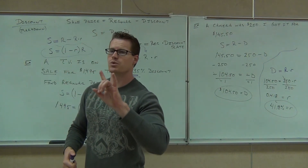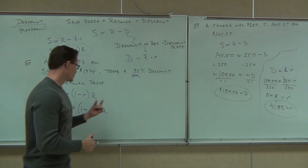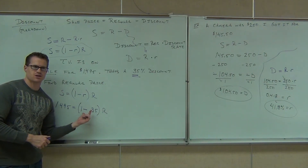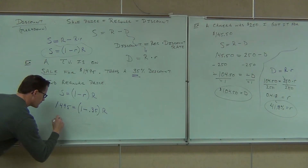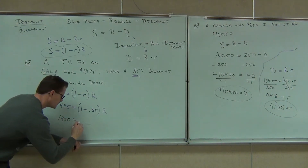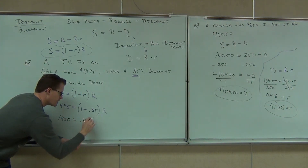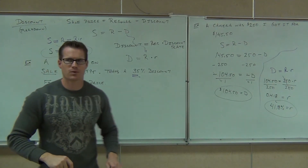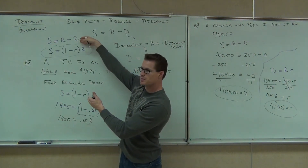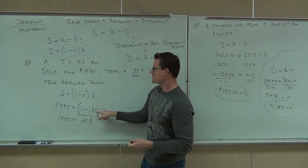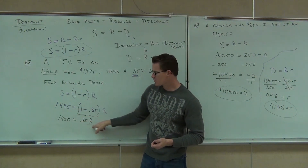We've got two steps left. The first step is to do operations like you normally would — subtract 1 minus 0.35, and you're going to get 0.65. See where the 0.65 is coming from? One minus 0.35 gives you 0.65. So this piece is 0.65R. We've plugged in the sale price, plugged in the discount rate, and did order of operations to get 0.65. Now can you tell me how you get rid of this 0.65? Divide.